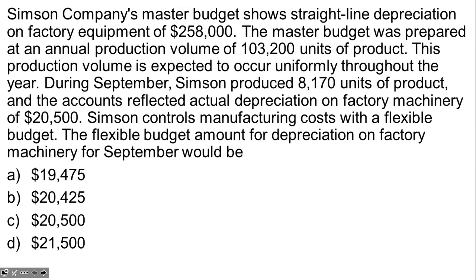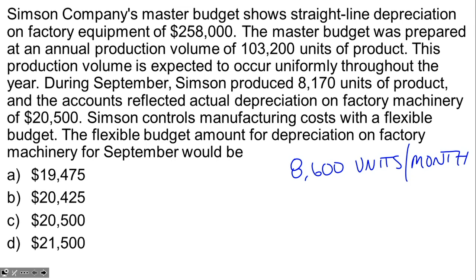This is a question about flexible budgets and the calculation of the flexible budget amount given the master budget and actual production. Simpson Company's master budget shows straight-line depreciation on factory equipment of $258,000. The master budget was prepared at an annual production volume of 103,200 units, expected to occur uniformly throughout the year — that's 8,600 units per month. During September, Simpson produced 8,170 units, and actual depreciation on factory machinery was $20,500.